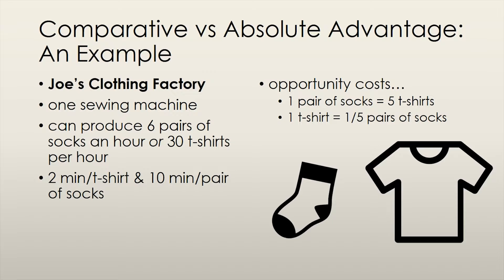These concepts are a little complicated, so here is an example to hopefully clear things up. Imagine an economy with two producers. Producer A is Joe, who runs a clothing factory. He only has one sewing machine, so he isn't as technologically advanced as he could be. Joe can produce, in a given hour, either 6 pairs of socks or 30 t-shirts — he can't produce both simultaneously. We can say it takes him 2 minutes to produce a t-shirt and 10 minutes to produce a pair of socks.